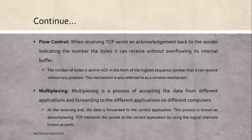Next is multiplexing. Multiplexing is a process of accepting data from different applications and forwarding it to different applications on different computers. At the receiving end, the data is forwarded to the correct application; this process is known as demultiplexing. TCP transmits the packet to the correct application by using the logical channel known as ports.